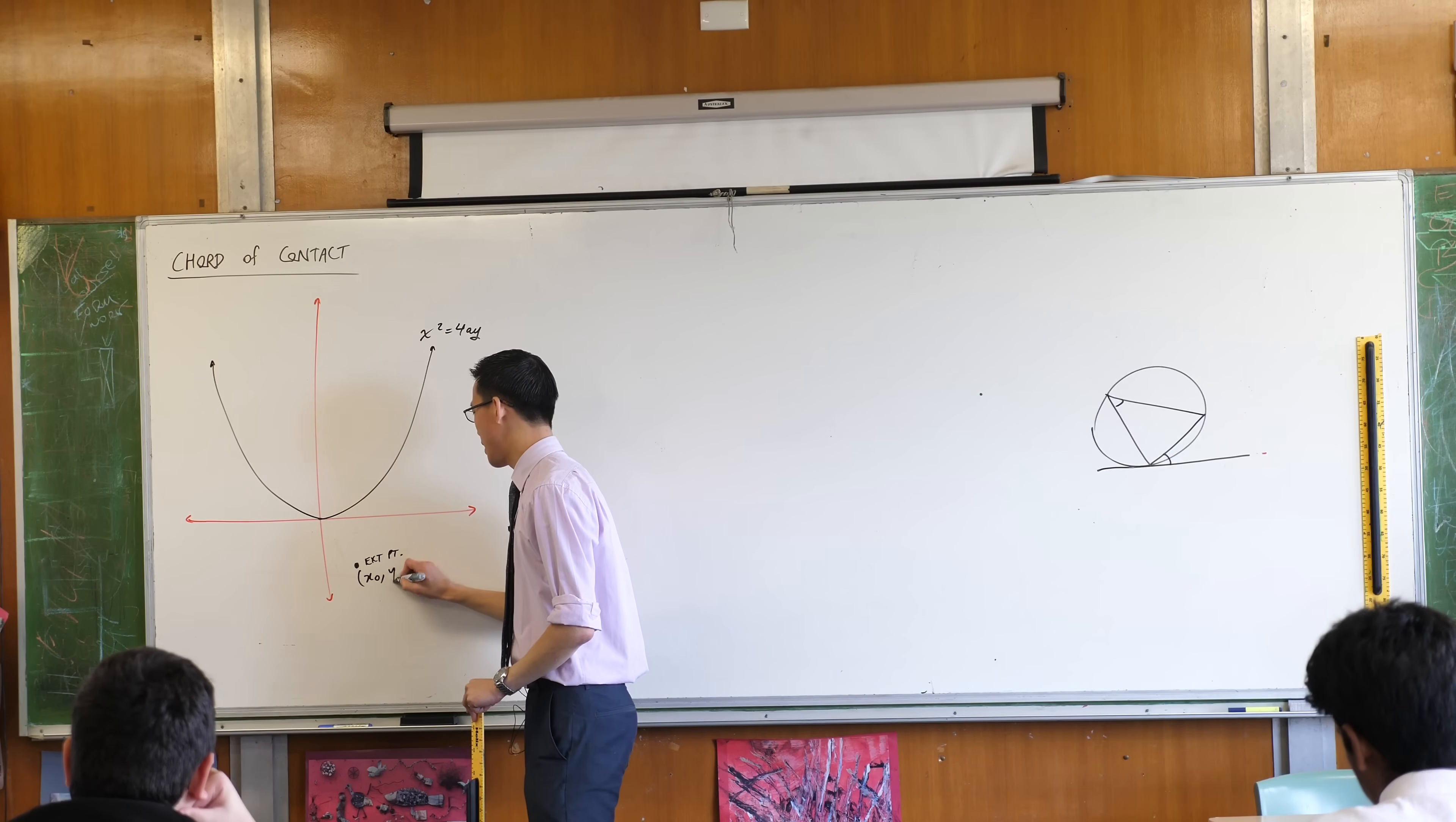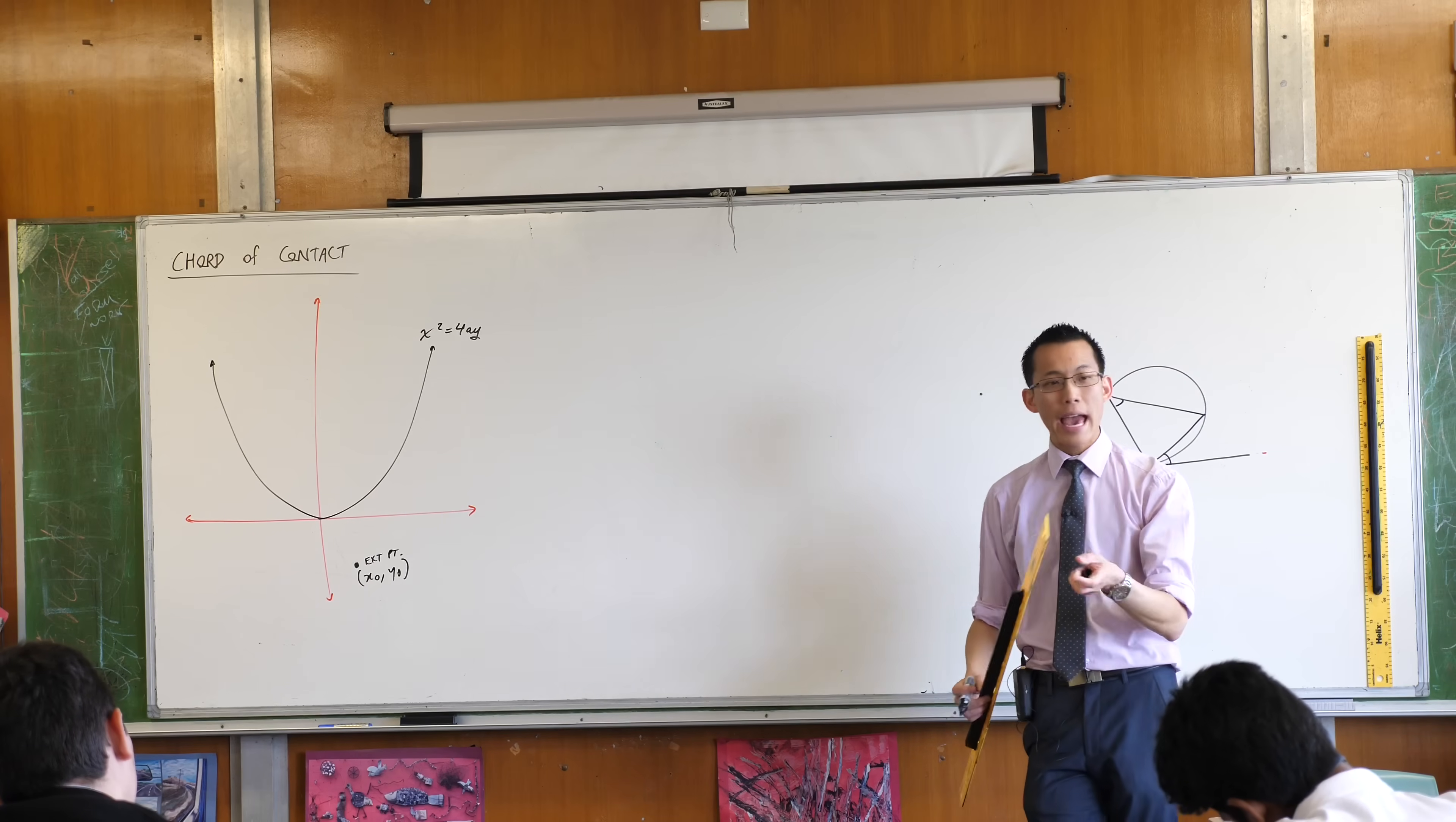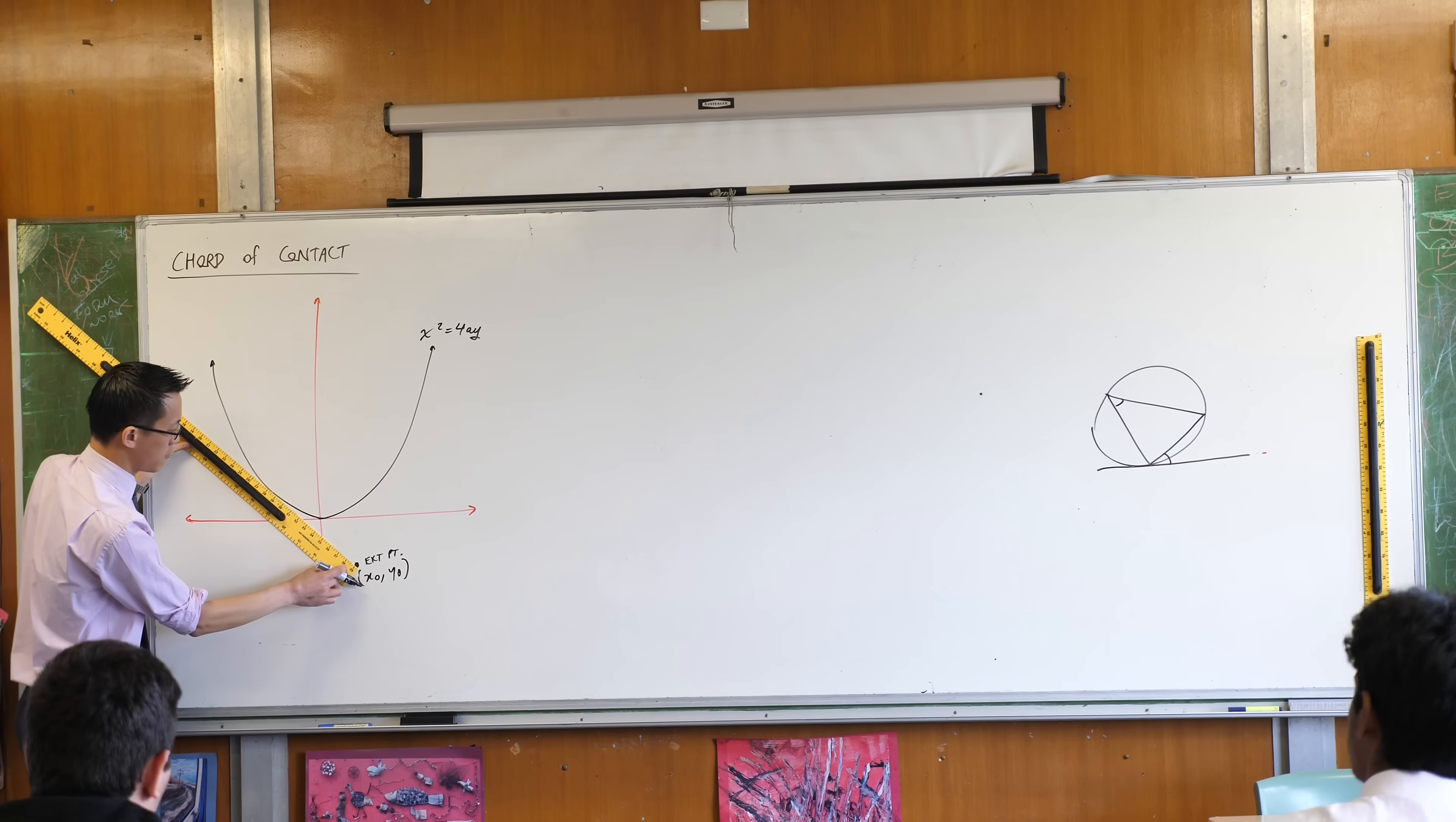When we usually pick like a random arbitrary point, we usually call it x1, y1, but we've already used x1, y1 to indicate a point that is on the parabola, right? x1, y1, that's like in Cartesian form, so this is not on the parabola, so that's why I'm labeling it a little bit different. Grab your ruler now and from your external point, just like with circles, you should be able to draw a pair of tangents that meet the parabola. I'll show you how to find them. If you go from your external point and you just move your ruler until it's like, bam, there we go, that's a tangent. So there's one, there we go.